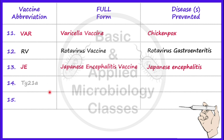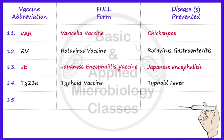Now let's take the next vaccine, that is Ty21a. It is known as the Typhoid vaccine and is used to protect against typhoid fever. This vaccine is given by intramuscular route.